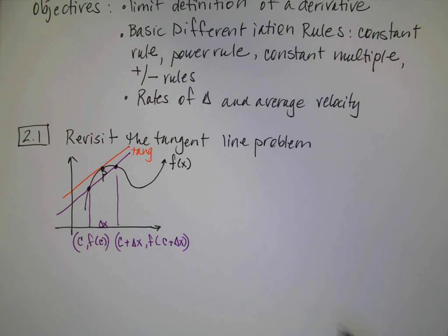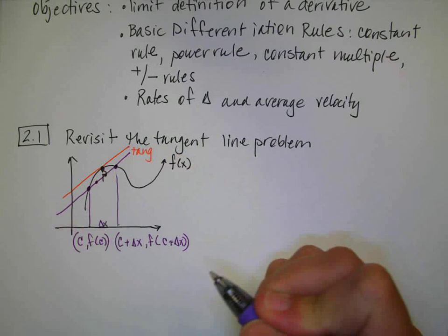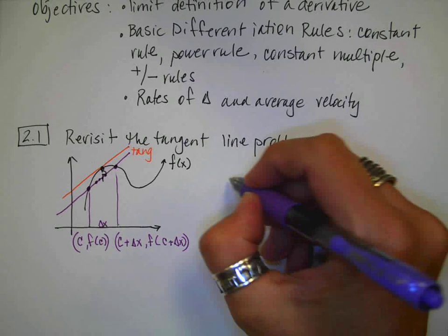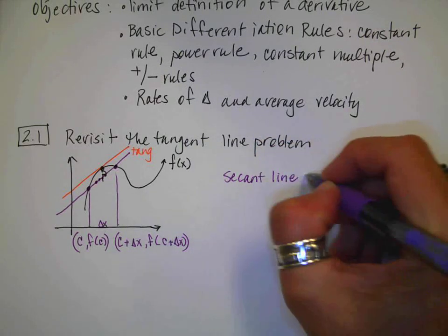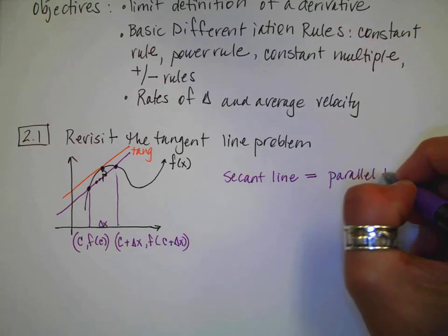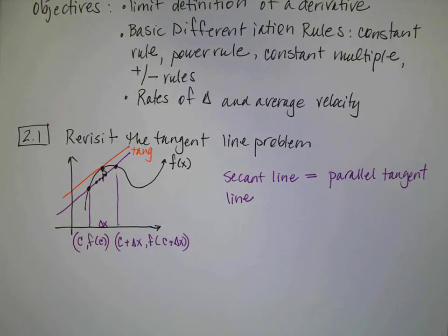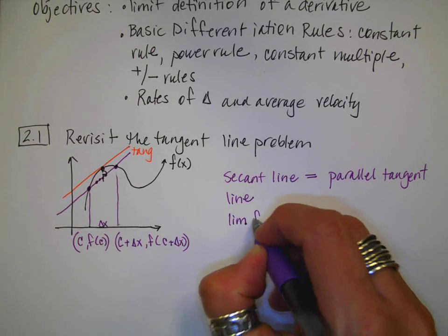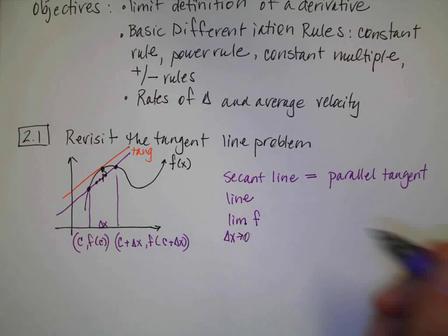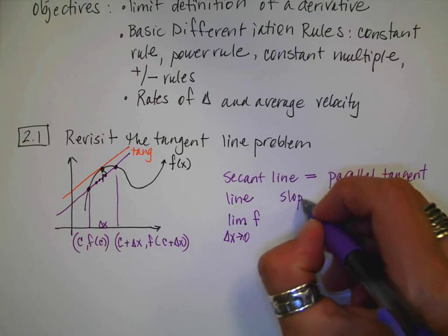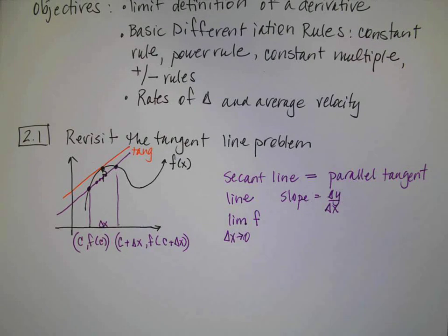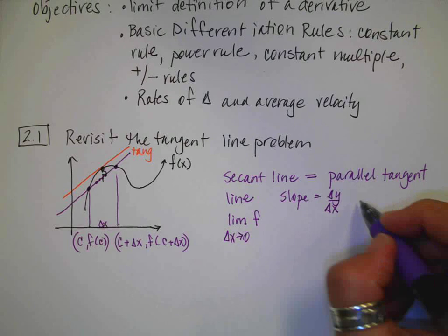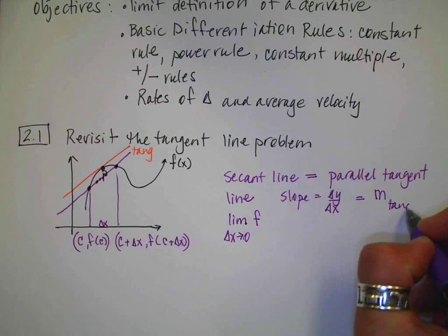The way the tangent line problem works is we think about delta x getting smaller and smaller and drawing those secant lines. What ends up happening is the secant line becomes parallel to the tangent line, which is really nice. As I get progressively closer and closer, I can talk about the limit of the function as delta x goes to zero. I want to talk about the slope - slope is delta y over delta x - and this is going to become the slope of the tangent, so I'll call it m-tangent.